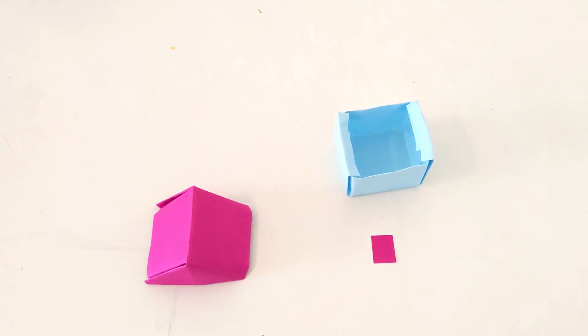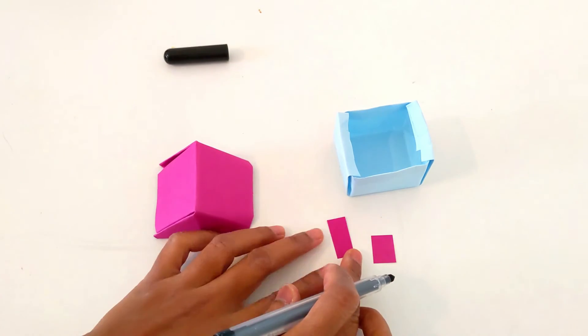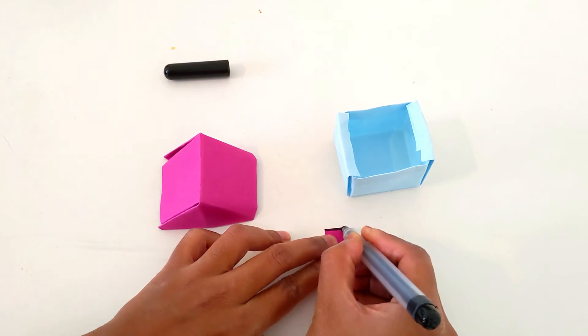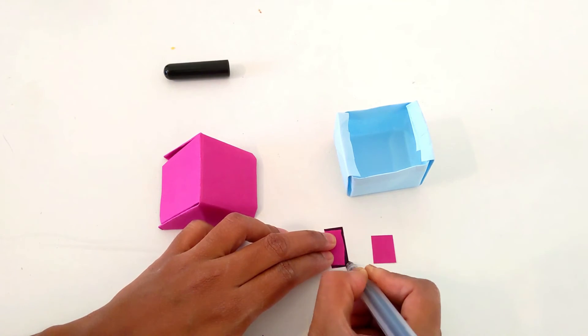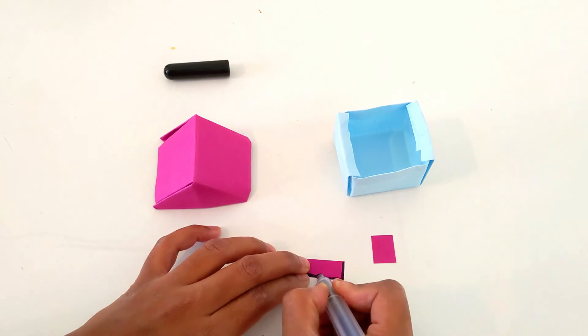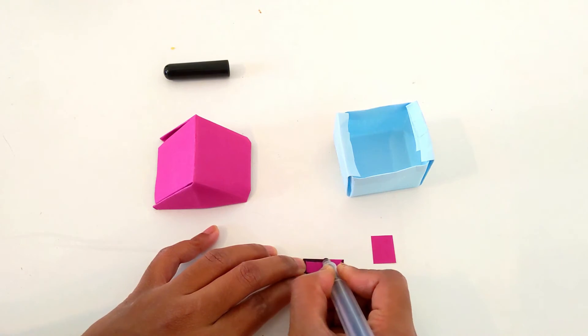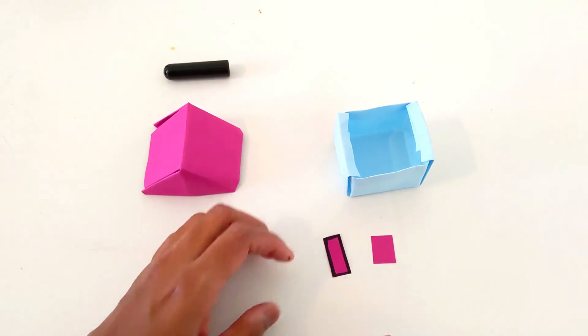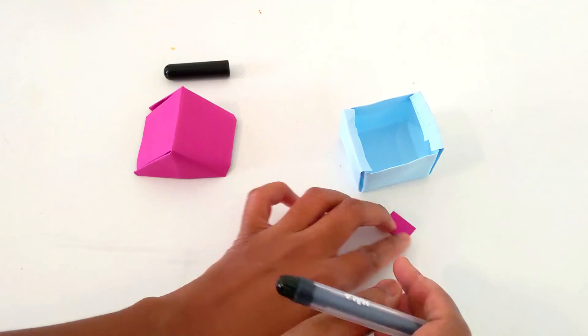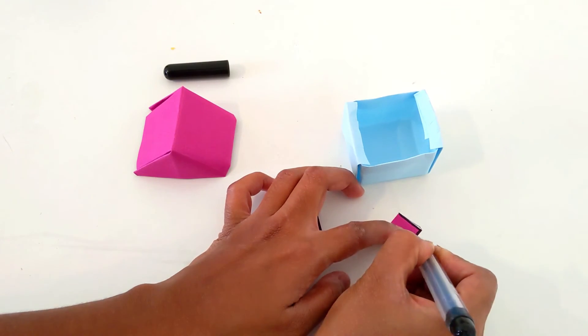Now let's make a door. I have taken small papers. I am just drawing the borders so that it looks like a door. In this small piece, let's make it a window.